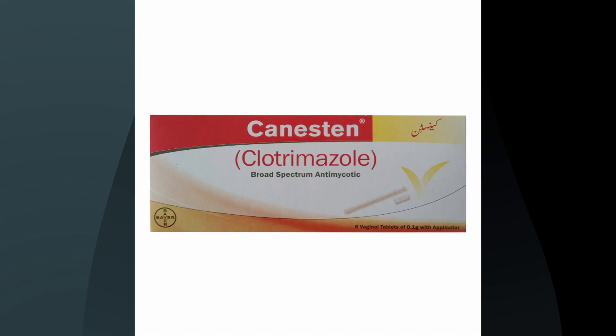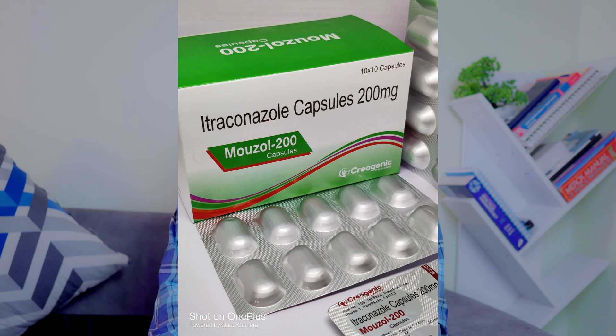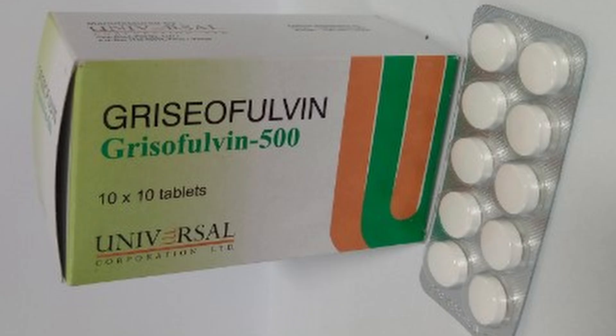For body ringworm treatment, we have topical antifungal medications including clotrimazole, ketoconazole, and terbinafine — terbinafine is usually very effective. If ketoconazole is not working, try terbinafine. Oral antifungals like fluconazole tablets, itraconazole, and terbinafine tablets can be used if the infection is deeper. For scalp ringworm, we also use topical application of drugs including itraconazole and terbinafine. The drug of choice for children is griseofulvin.